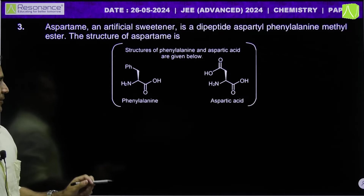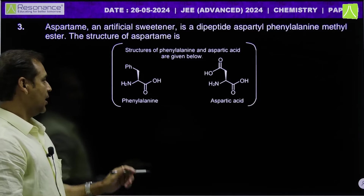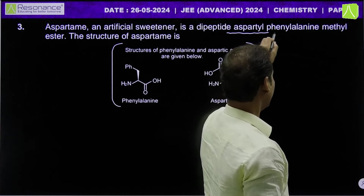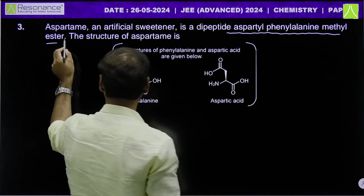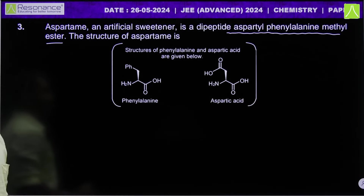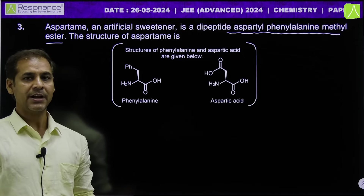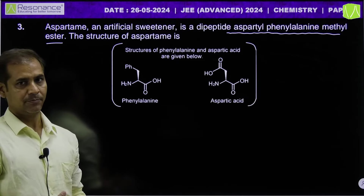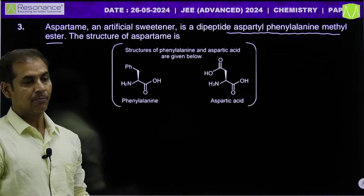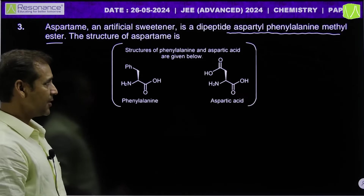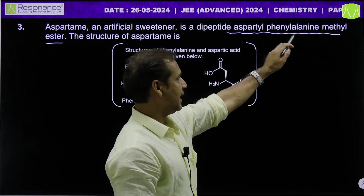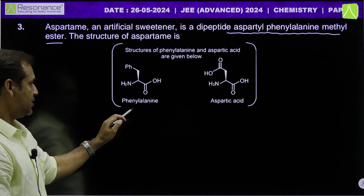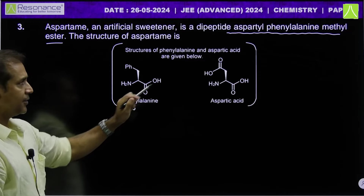The structure of aspartame involves two amino acids: phenylalanine and aspartic acid. Its full name is aspartyl phenylalanine methyl ester. It is a dipeptide. In naming dipeptides, the parent amino acid is always on the right, and the remaining amino acid is the substituent. So phenylalanine is on the right, and aspartic acid is the substituent on the left. This is phenylalanine methyl ester.